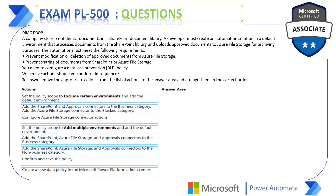Action 5: Add SharePoint, Azure File Storage, and Approval connectors to the Business category — yes, we added all three connectors to Business, so this is correct. Action 6: Add SharePoint, Azure File Storage, and Approval connectors to the Non-Business category — we are adding to Business, not Non-Business, so this is wrong. Action 7: Confirm and save the policy — yes, at the final step we review and create the policy, so this is used. Action 8: Create a new data policy in the Microsoft Power Platform Admin Center — yes, that is the first thing we do.